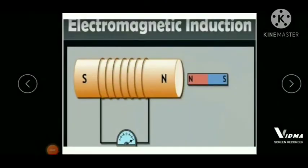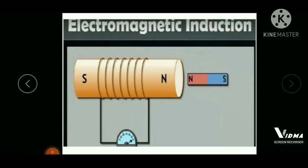Good afternoon students, let us continue our third chapter: electromagnetic induction. In the previous class we learned what electromagnetic induction is — whenever there is a change in the magnetic flux linked with a coil, an EMF is induced in the coil. This phenomenon is known as electromagnetic induction. After that we saw the factors affecting induced EMF: the number of turns of the coil, movement of the magnet or solenoid, and magnetism.